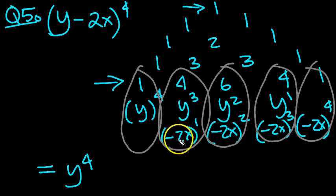Next one, minus 2 times 4 is minus 8. We've got an x to the power 1, which is just an x. And then we've got a y cubed.